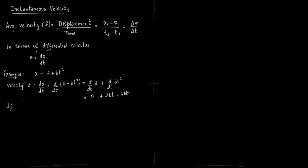Now if you are given specific values: say a is 8.5 and b is 2.5, and time equals 2 seconds — what is the velocity exactly at 2 seconds? That is the meaning of instantaneous velocity; you can find velocity exactly at a point in time. Velocity equals 2bt = 2 × 2.5 × 2 = 10 meters per second.